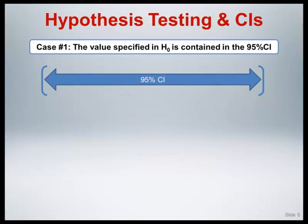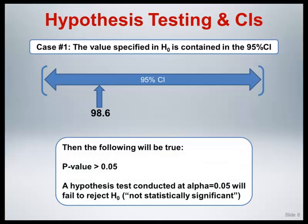Let's now turn our attention to the relationship between hypothesis testing and confidence intervals. There is a duality that exists between them that turns out to be very useful and informative. For the purposes of illustration, let's return to the body temperature data example and assume that our null hypothesis is 98.6 degrees Fahrenheit, and we are conducting a two-sided test at the standard 0.05 alpha level. In the first case, the value specified in the null hypothesis is contained in the 95% confidence interval. If this is the case, the p-value for this hypothesis test will be greater than 0.05, and the conclusion will be to fail to reject the null hypothesis.